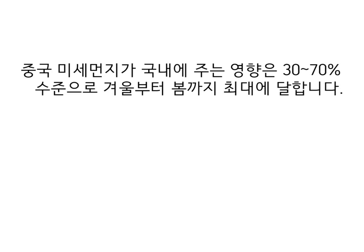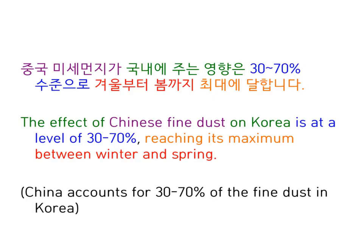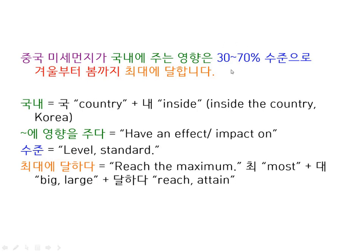중국 미세먼지가 국내에 주는 영향은 30에서 70% 수준으로 겨울부터 봄까지 최대에 달합니다. The effect of Chinese fine dust on Korea is at a level of 30 to 70%, reaching its maximum between winter and spring. To summarize: China accounts for 30 to 70% of the fine dust in Korea. When you have numbers like this with a dash in the middle, you read the first number with 에서 in front of it — 삼십에서 칠십 — to say 30 to 70%. If you watch the original news clip, you'll hear the man saying it that way.